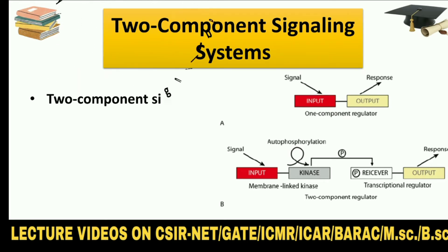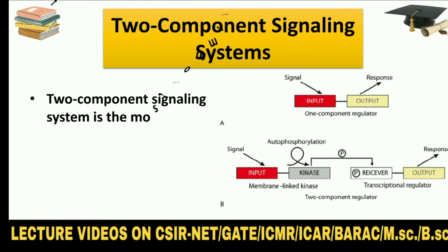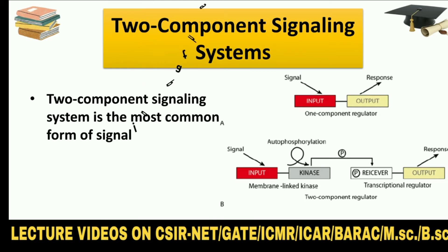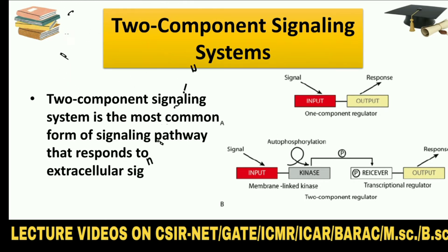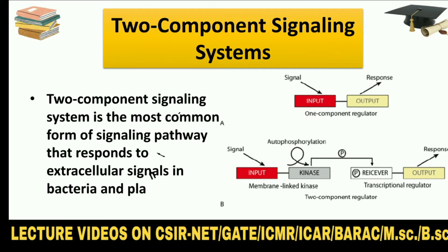Two-component signaling system is the most common form of signaling pathway that responds to extracellular signals in bacteria and plants.